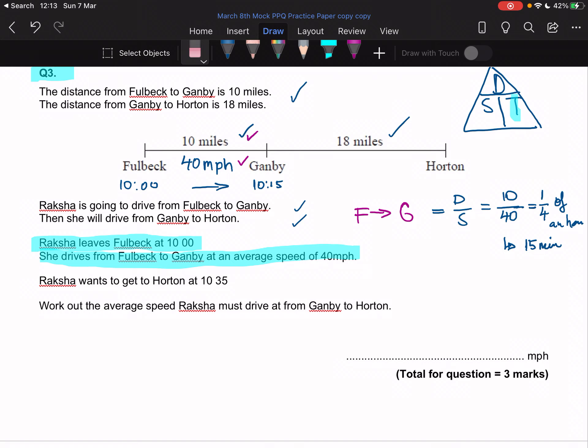Between Gamby and Horton, I know she wants to reach Horton at 10:35. She needs to be here at 10:35, which gives me 20 minutes. But because we're working in miles per hour, we have to convert these minutes into hours. That's going to be 20 minutes out of 60 in an hour, which simplifies to a third of an hour.